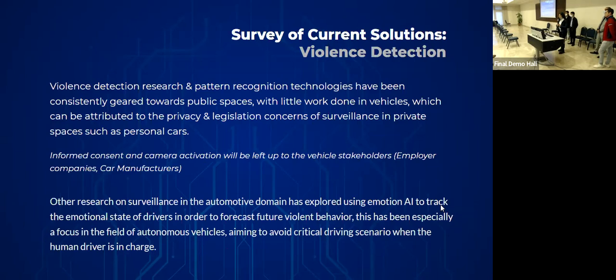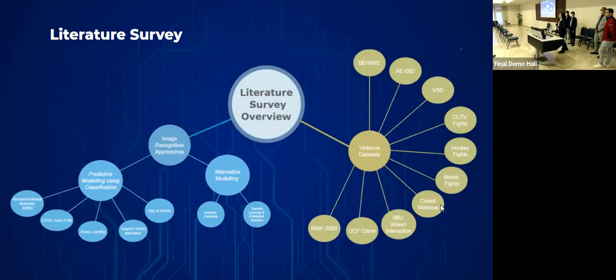As for our literature survey, you can see it mostly highlights the prominent patterns that we have found within our research, which mainly found that the bulk of motion detection research usually composed of recurrent neural networks such as long short-term memory networks, as well as support vector machines and other deep learning techniques. Anomaly detection and transfer learning on pre-trained modules are also relatively common.